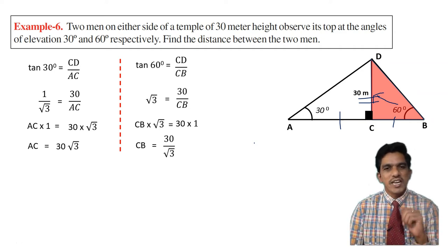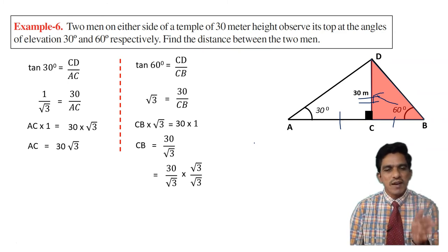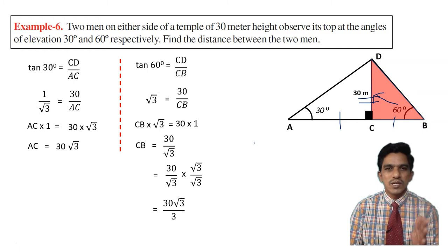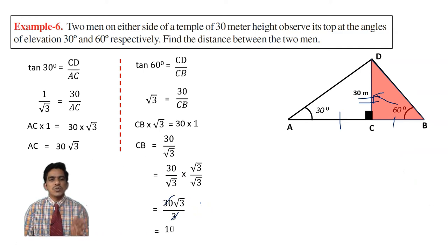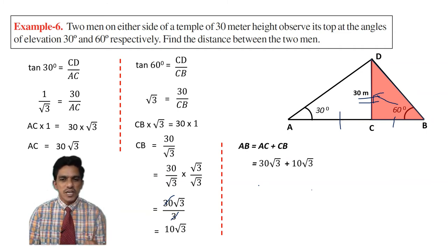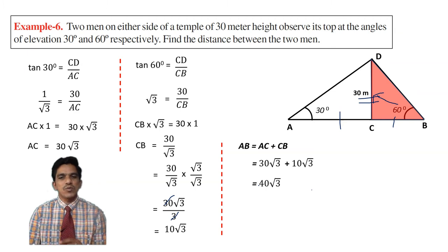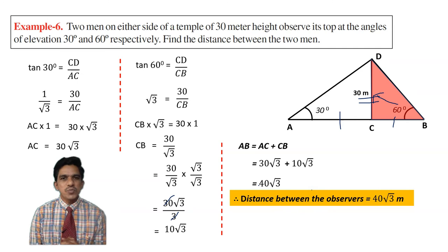When you have an irrational number in the denominator you must rationalize. Multiply numerator and denominator by root 3: numerator gives 30 root 3, denominator gives root 3 times root 3 equals 3. So CB equals 30 root 3 over 3 equals 10 root 3. We now have AC equals 30 root 3 and CB equals 10 root 3. AB equals AC plus CB equals 30 root 3 plus 10 root 3 equals 40 root 3 meters.